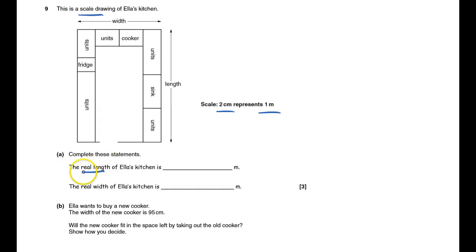The real length of things - this is the real length - if I measure that on mine it gets to eight centimeters. Of course yours may be a bit different, depends whether you printed it out yourself or whether it's a proper exam paper. So if it's eight centimeters and we want to have meters, we have to divide by two to get the number of meters. That'll be four meters.